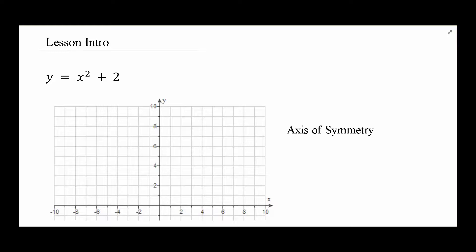As long as we have our quadratic functions written in the form of these shifts, they're pretty easy to graph. All I really need to graph a quadratic function is to know where the vertex is — which we usually get from shifts — and then the 1-4-9 thing. If I can do that, given any quadratic function ever, I can graph them all.